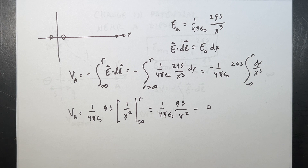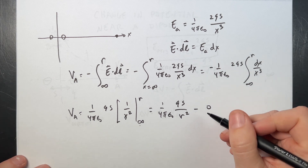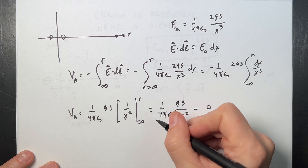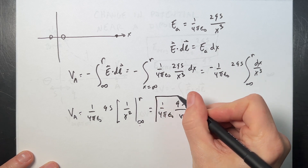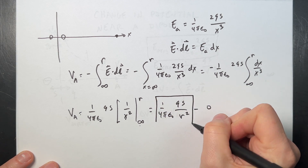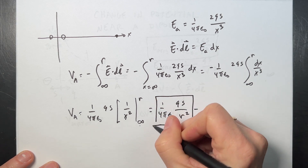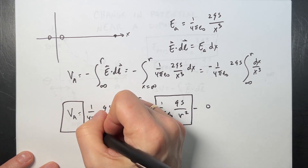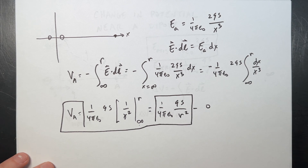So that's the potential at A as a function of R. I can plug in my value for R in just a second. That's my boxed result for VA.